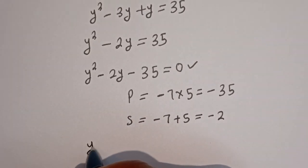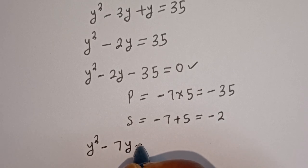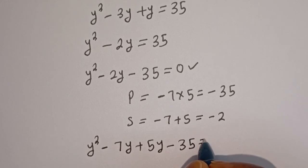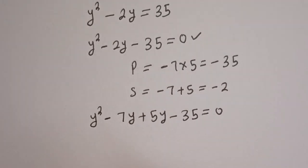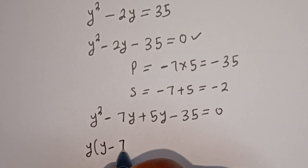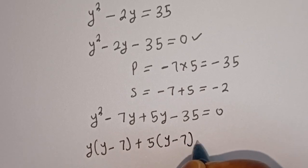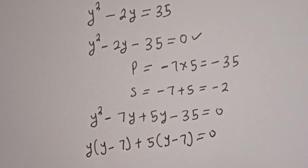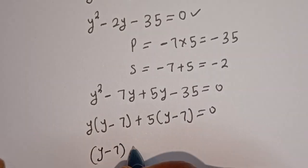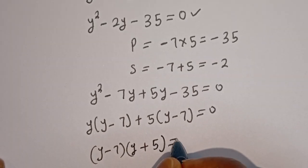We rewrite as y squared minus 7y plus 5y minus 35 equals 0. Factoring: y is common in the first two terms giving y bracket y minus 7, and 5 is common in the last two terms giving 5 bracket y minus 7. So y minus 7 is common, giving y minus 7 bracket y plus 5 equals 0.